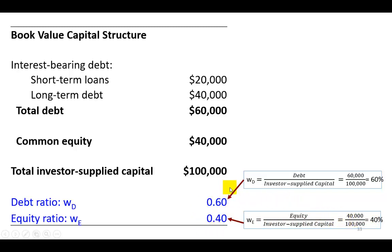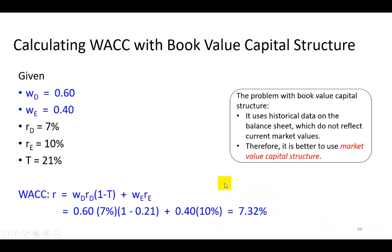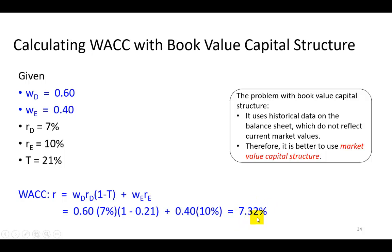This gives us the book value capital structure, which together with the firm's component costs of debt and equity and the tax rate, allows us to calculate the weighted average cost of capital to be 7.32%. We will then use this figure in valuation.